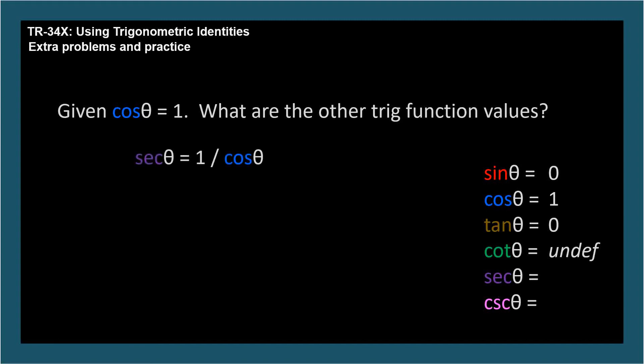Secant theta is 1 over cosine theta. 1 over 1 is 1, so secant theta equals 1. Cosecant is 1 over sine theta. 1 over 0 is undefined again, so cosecant theta is undefined at angle theta. And we found the values for all the trig functions at angle theta.